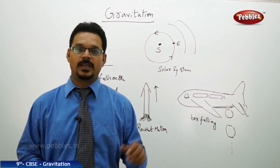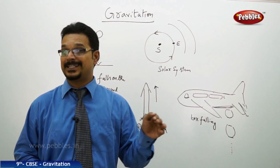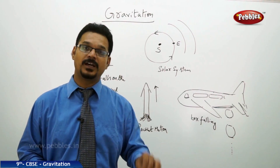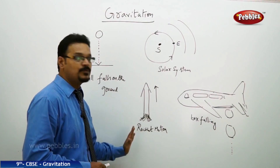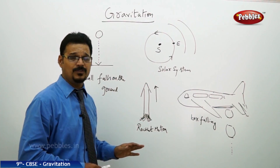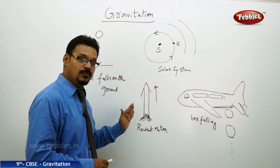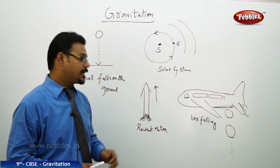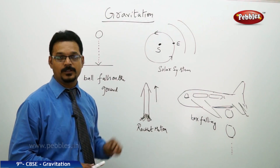A person jumping from a certain height doesn't float in the air — he or she has to fall to the ground. Why? A rocket always moves in the upward direction. Scientists say the rocket should have a fixed minimum velocity to move upward, and they have estimated that it is the escape velocity, which is 11.2 kilometers per second.